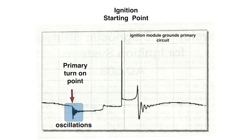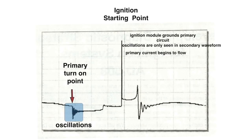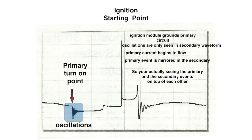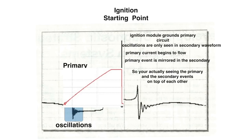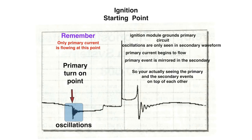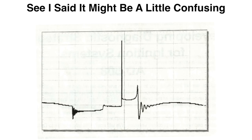Oscillations are only seen in the secondary waveform — you won't see them in the primary. The primary current begins to flow and the waveform would look like that, but that would be looking at the primary waveform. The primary is mirrored in the secondary, so you're actually seeing the primary and secondary events on top of each other. Only primary current is flowing at this point, but only the secondary is visible.